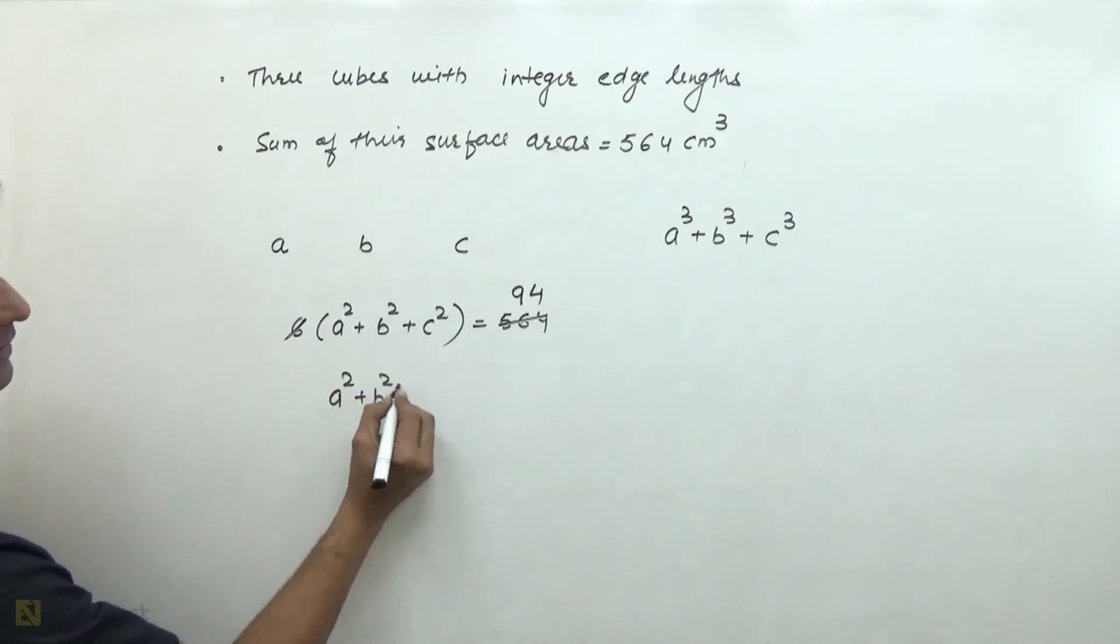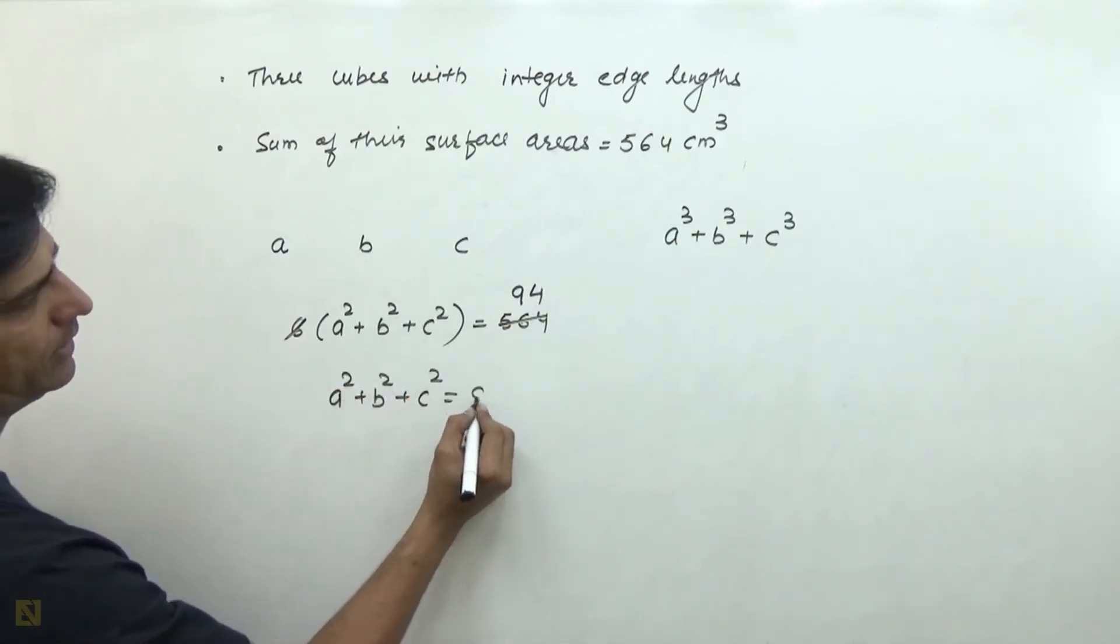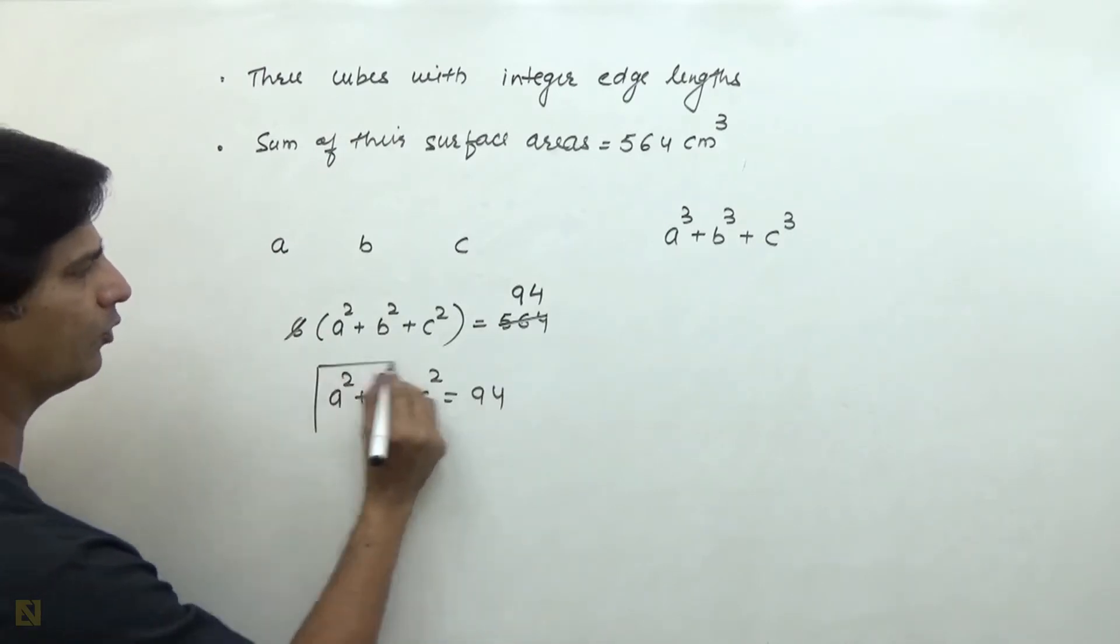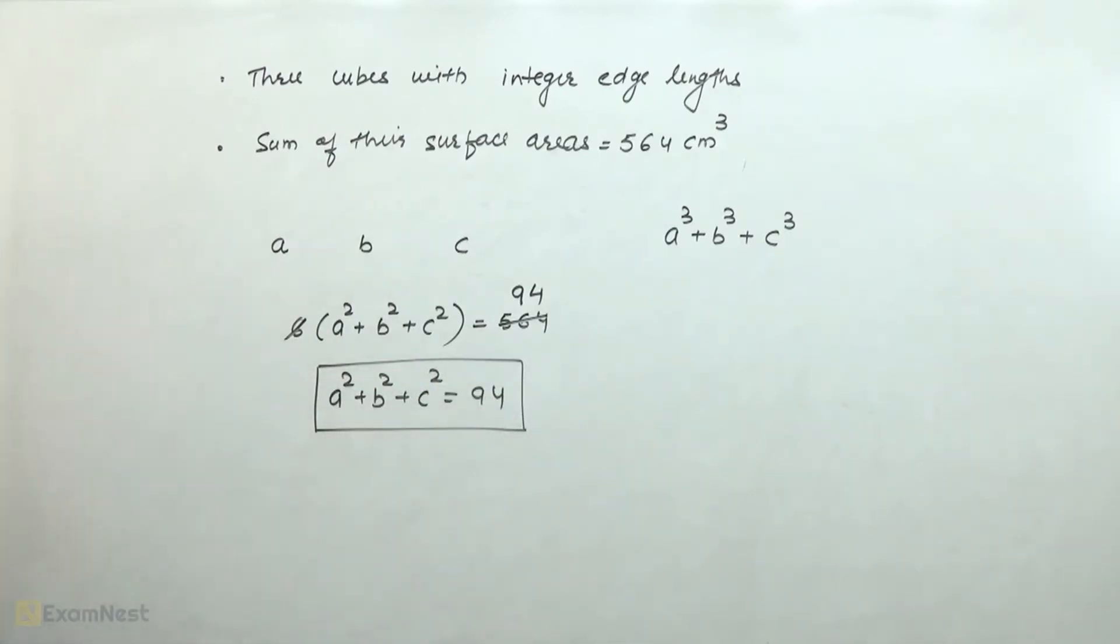So, A² + B² + C² is equal to 94, where A, B, C are positive integers.